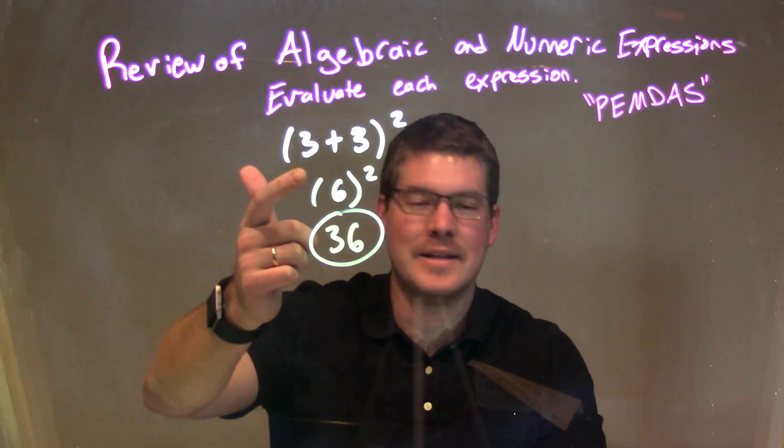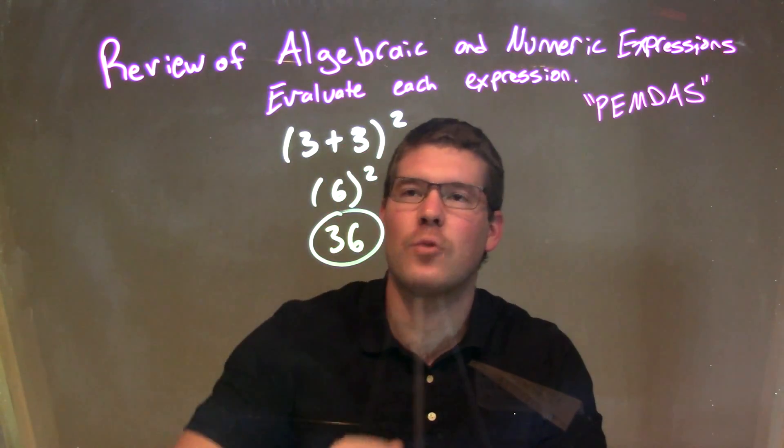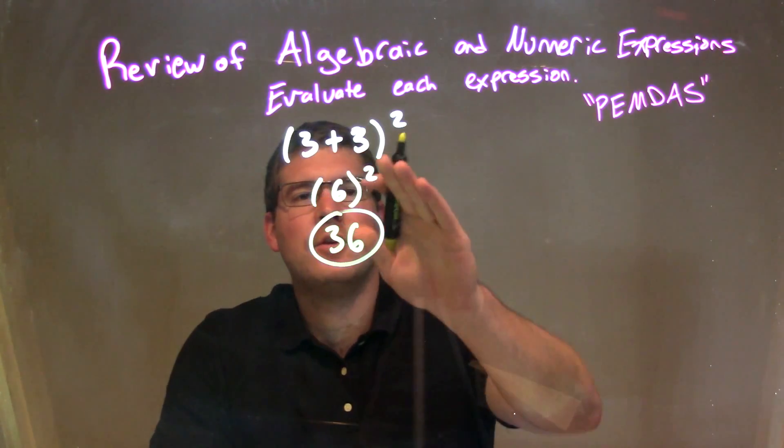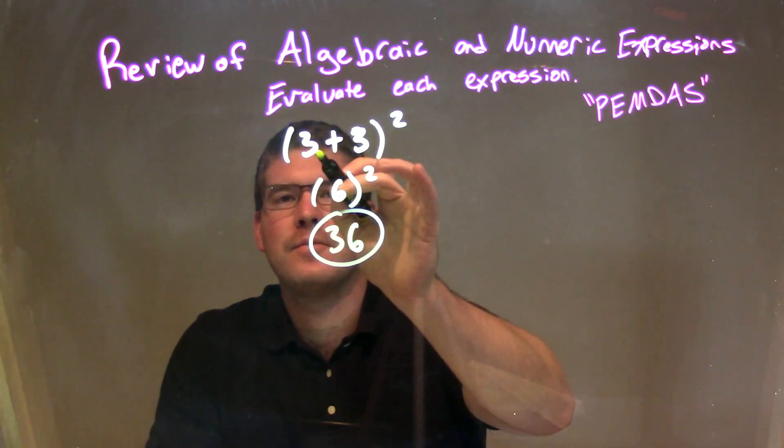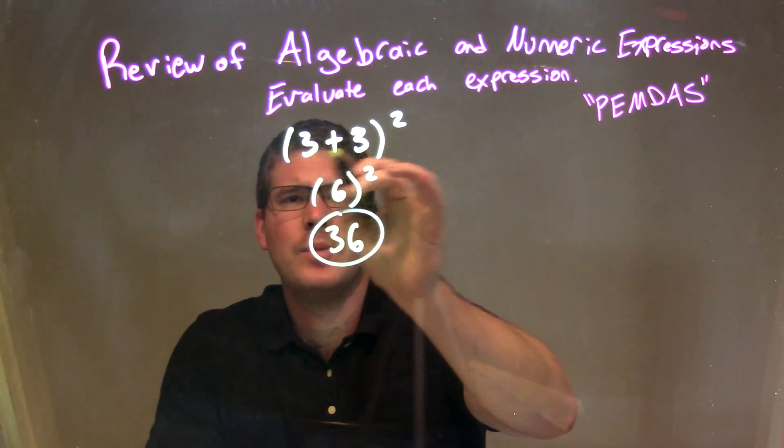So, let's recap. We're given 3 plus 3 inside of a parentheses, and we have to square that. What we need to do is, first, we look at our parentheses. We'll look inside. 3 plus 3 is a 6.